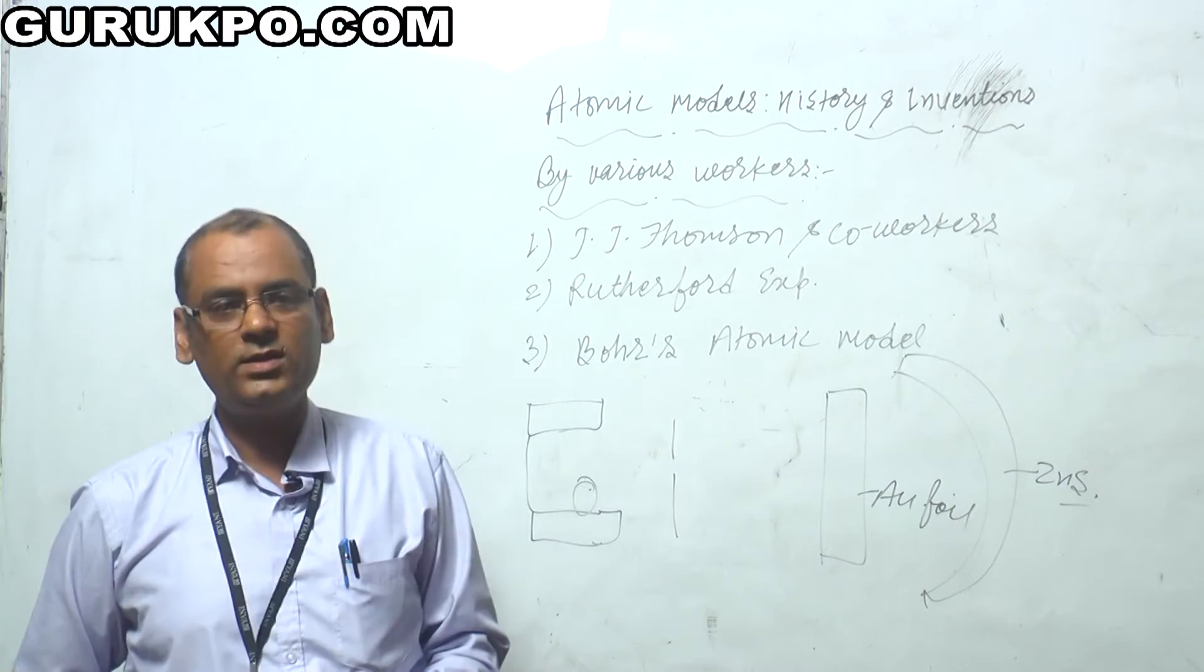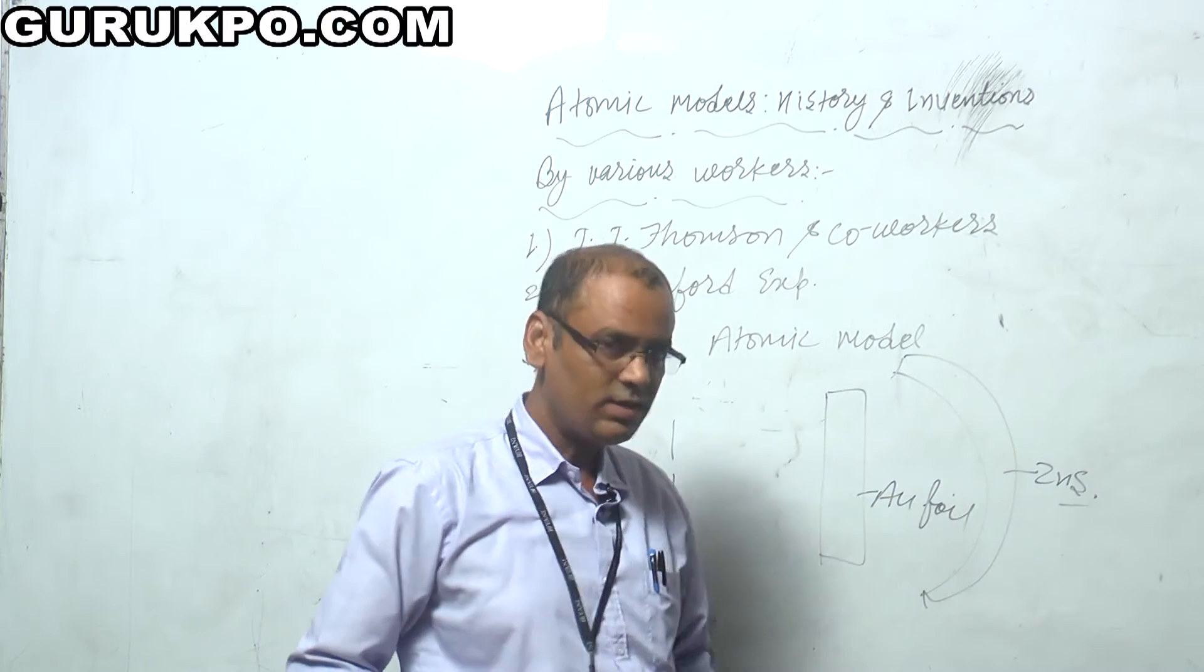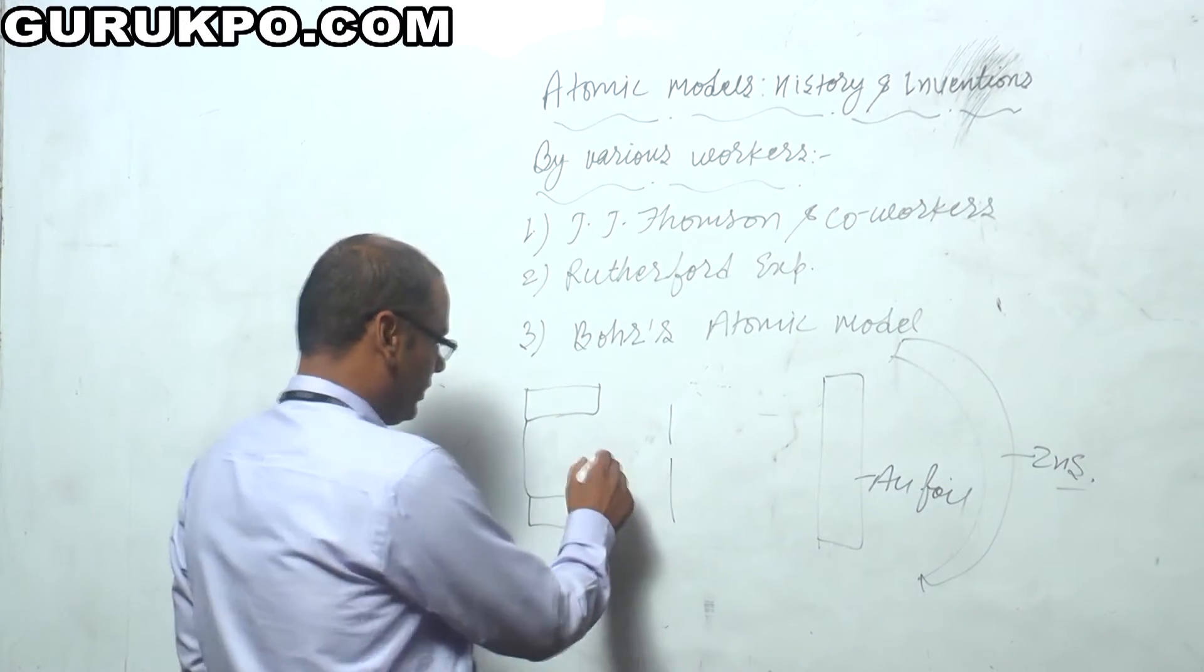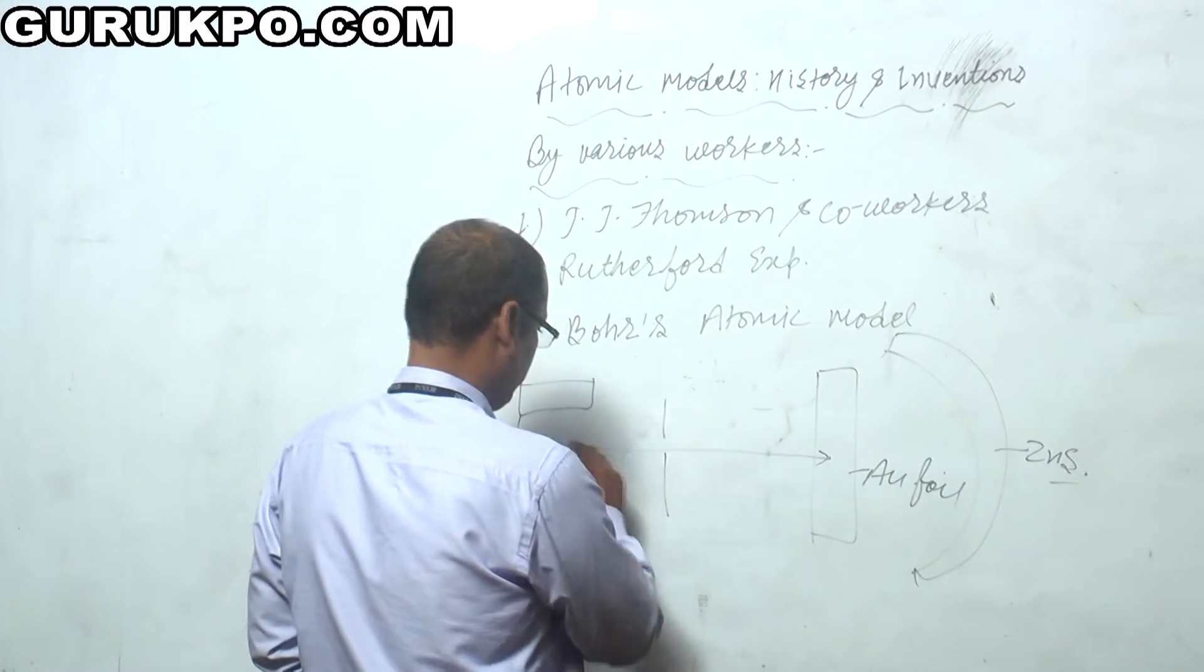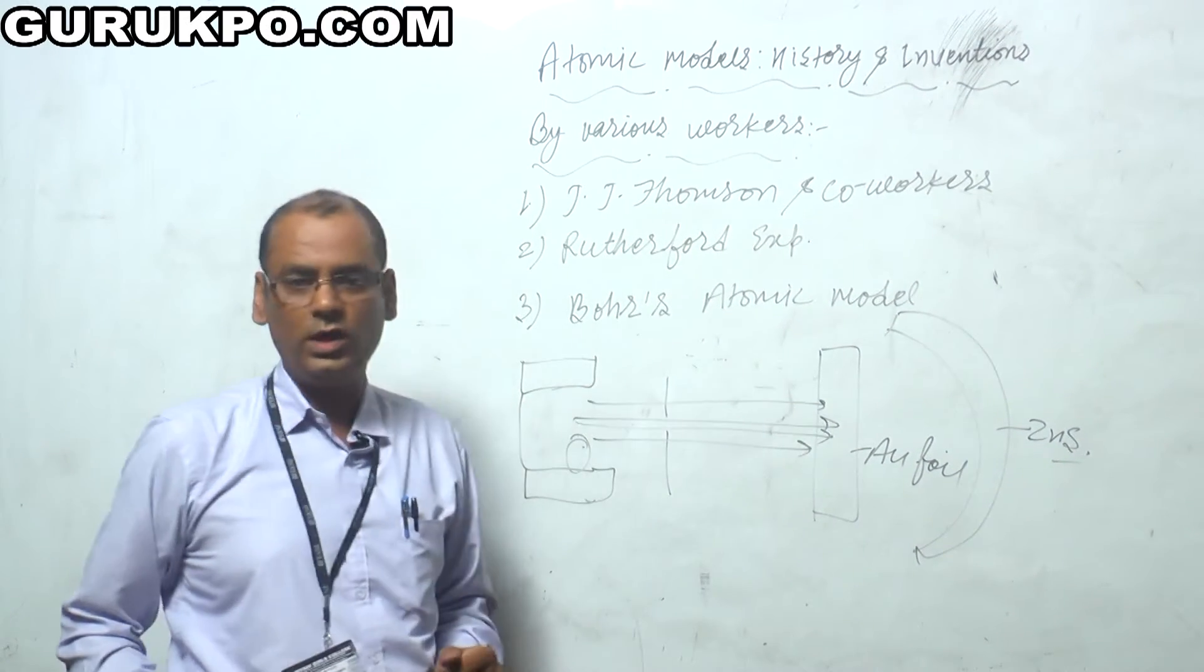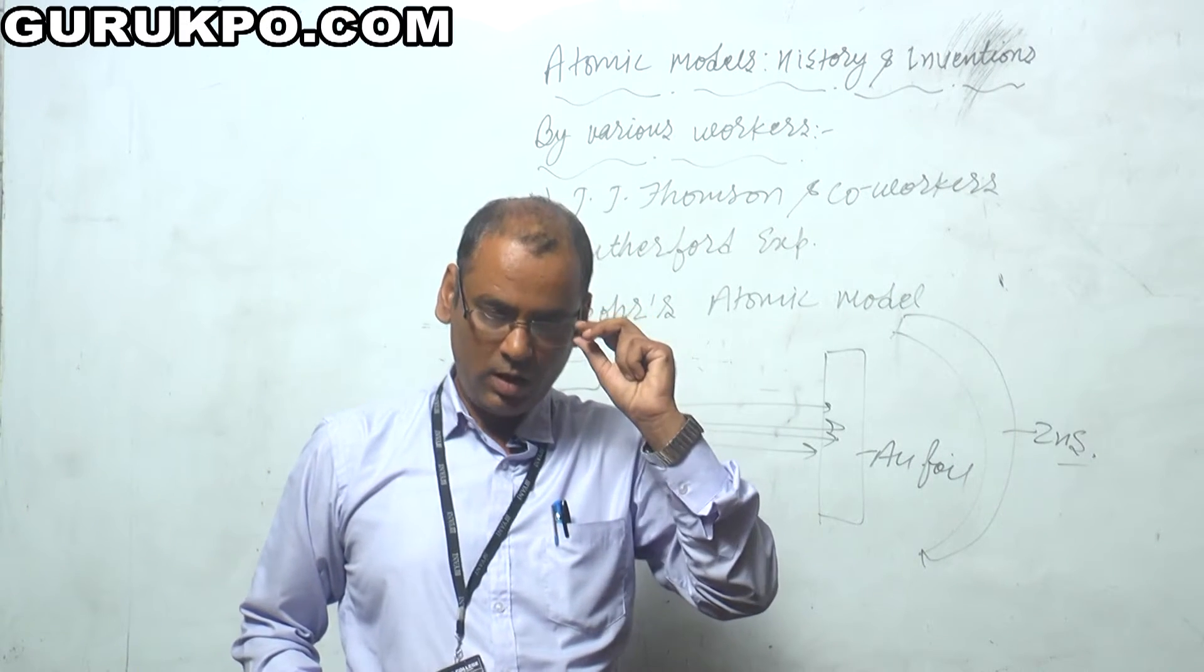This recognized the various types of particles if they strike on the surface of zinc sulfide. What he has done: he created the source of alpha particles and struck on the gold foil, and he observed a number of observations.